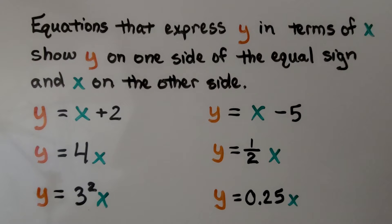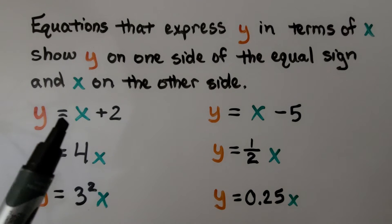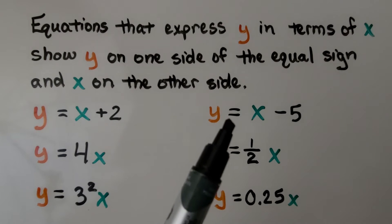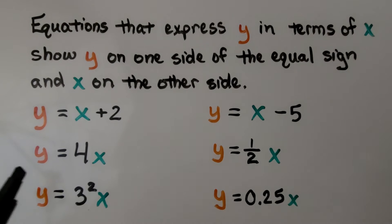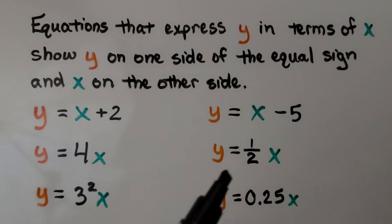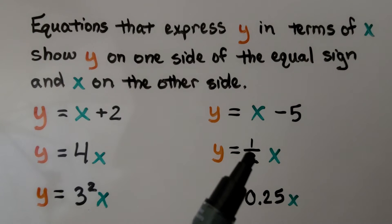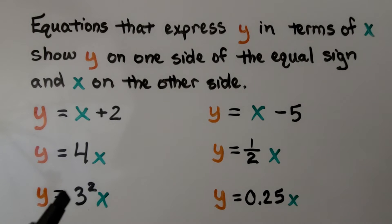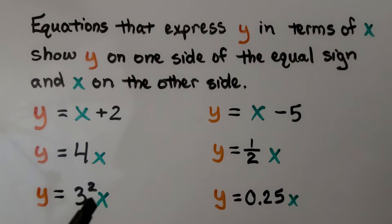Equations that express y in terms of x show y on one side of the equal sign and x on the other side. Here are some examples: y could equal some number x plus 2, or x minus 5. It could equal 4 times x, or half times x, or 3 squared times x — which would be 9x — or even 0.25 times x. These are all y in terms of x equations.